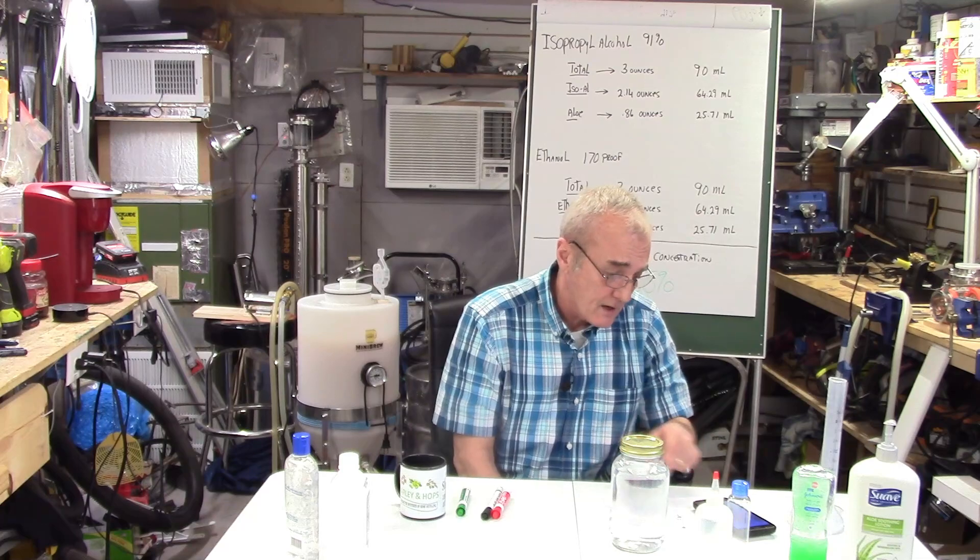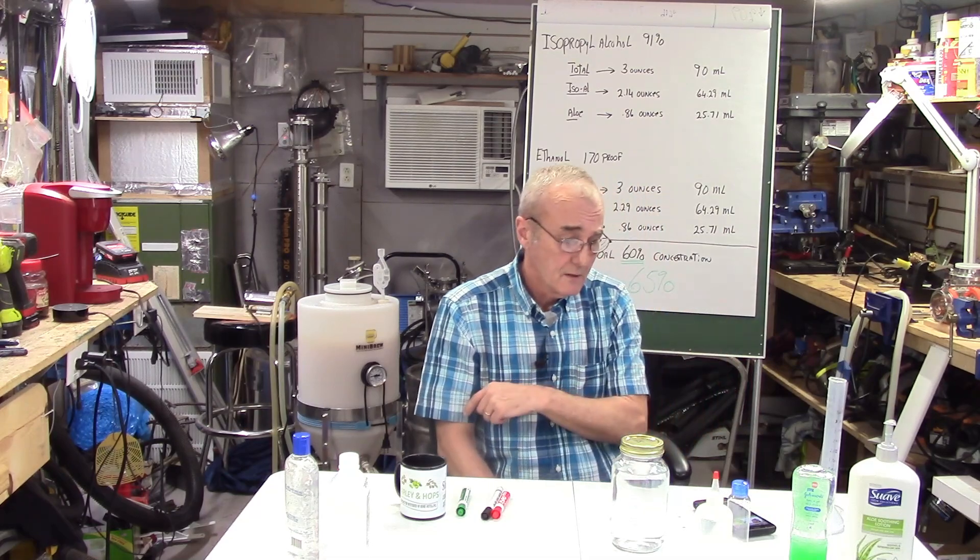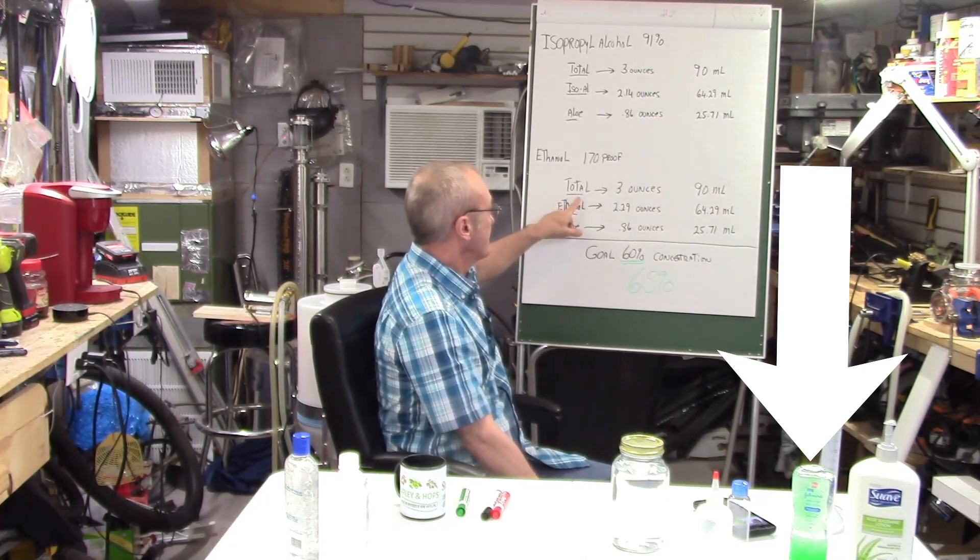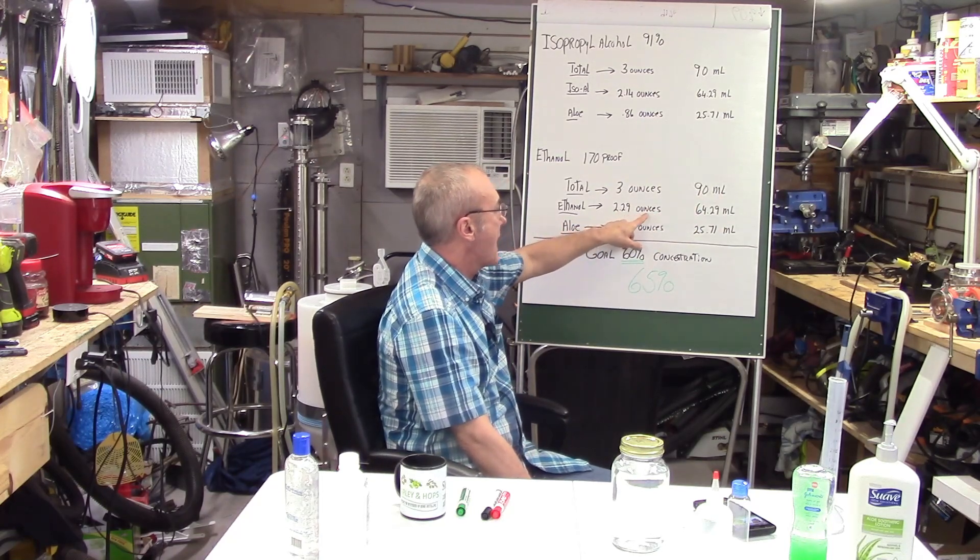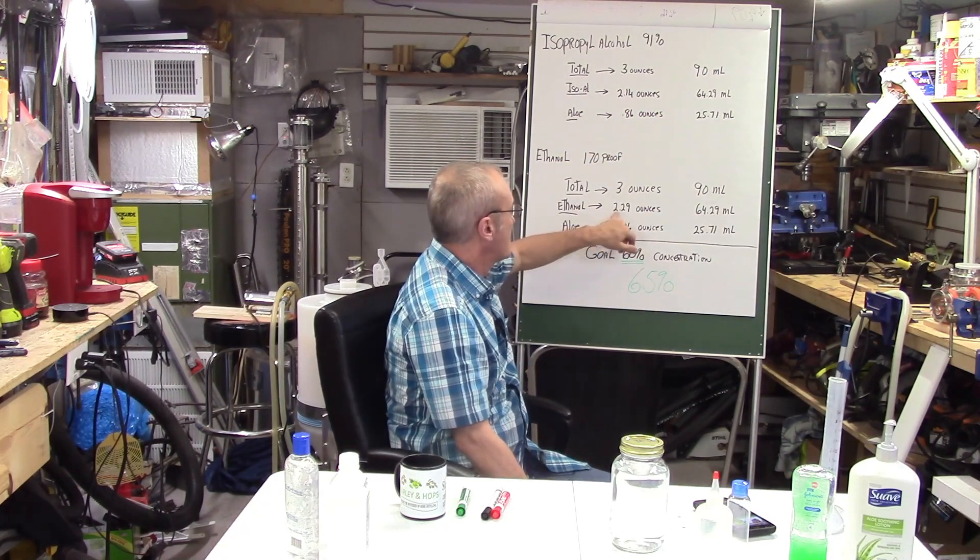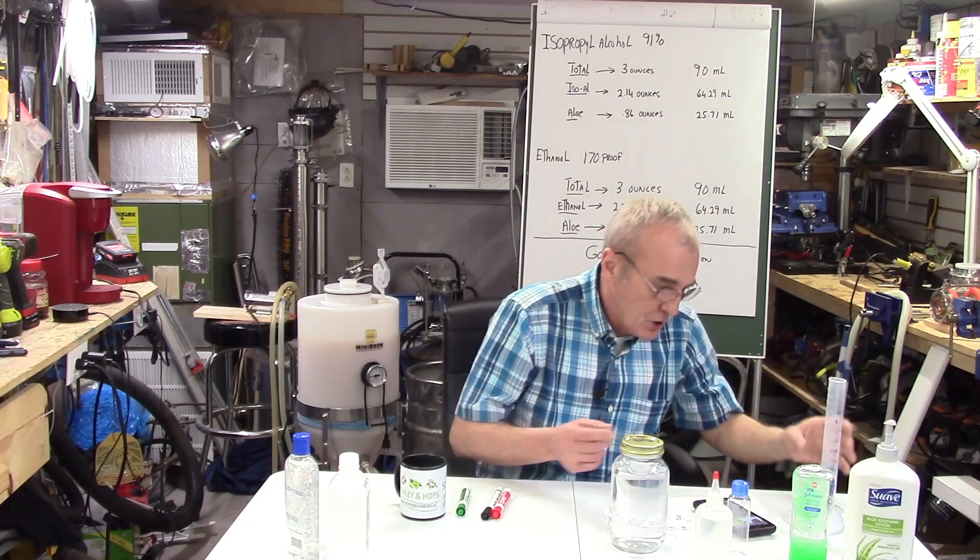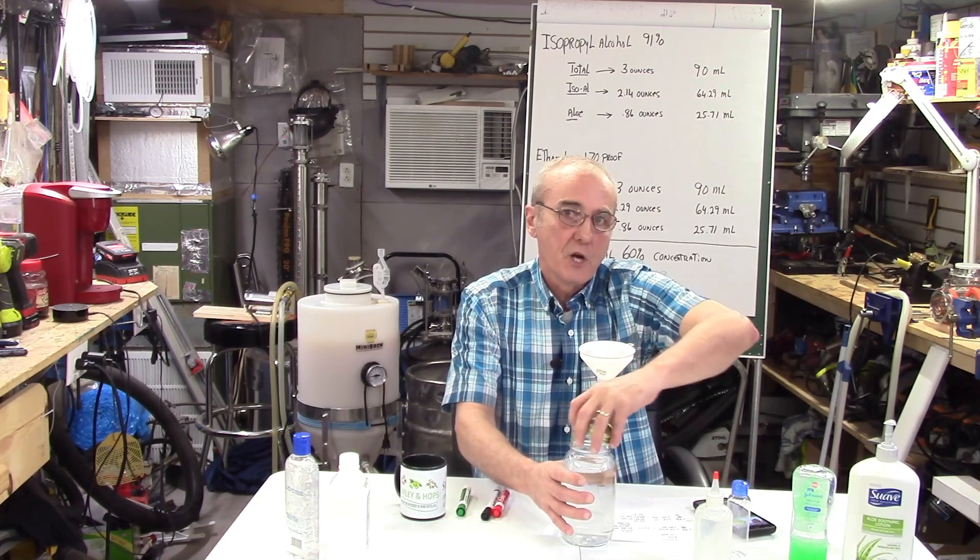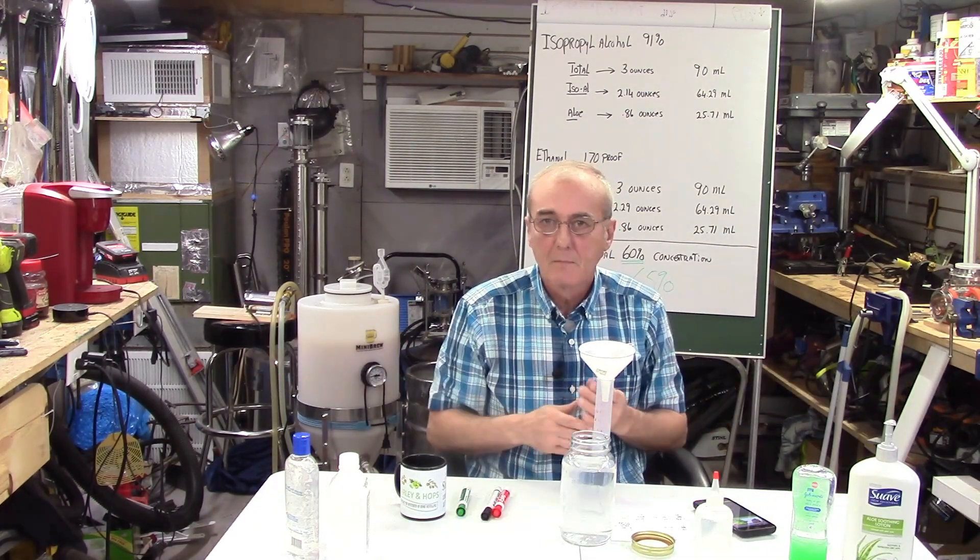So we did the same thing with our calculator. We went to our Barley & Hops calculator, which was the target volume dilution calculator. You'll find that below in the video. And at 170 proof, our total for 3 ounces, 90 milliliters. Our ethanol was 2.29 ounces, which is a little bit more than our isopropyl alcohol. So 2.29 ounces. And then the aloe, 0.86 ounces. So let us do that. And oh, by the way, if you get an opportunity while I'm sitting here doing this mixing, of course subscribe, share us with your friends, like the video. I've got to ask. Love the sound of fermentation.